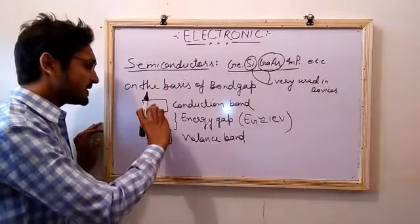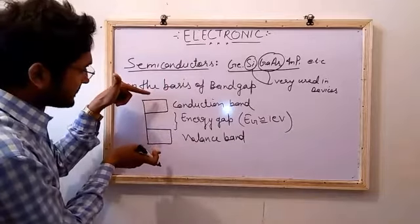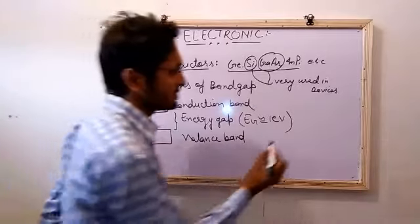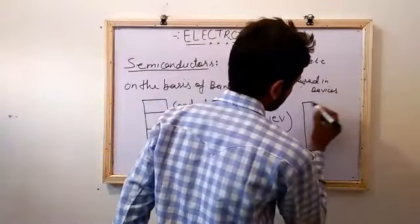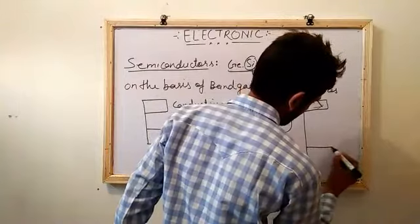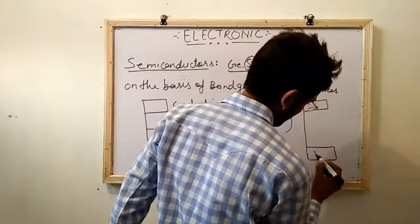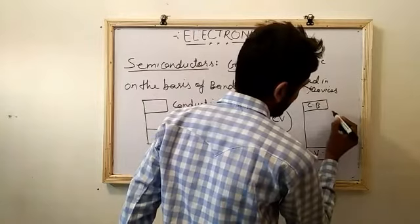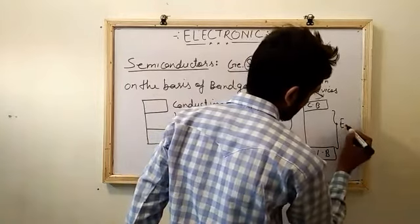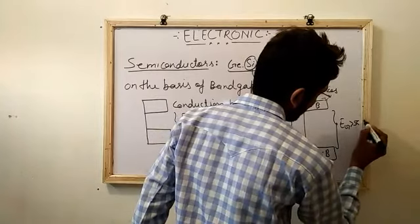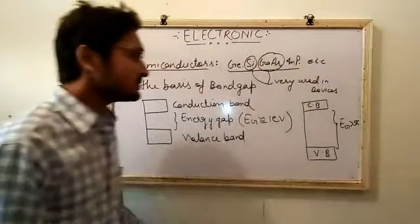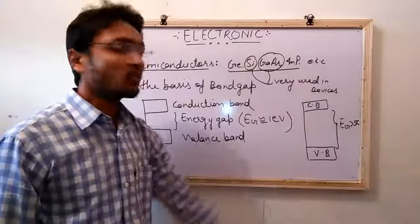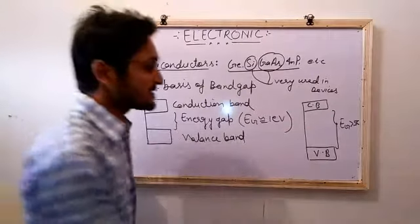If the band gap is larger than this — greater than much higher electron volts — those types of materials are known as insulators. More than 5 electron volts band gap is known as an insulator.